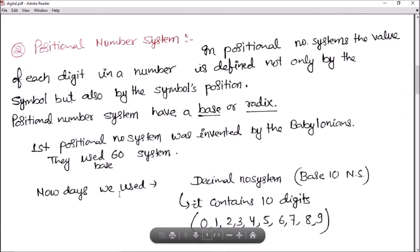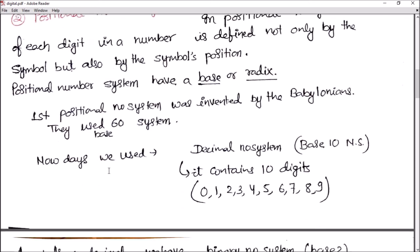They used base sixty number system, which had sixty symbols. But nowadays, we use decimal number system which has base 10. That means it contains 10 digits: 0, 1, 2, 3, 4, 5, 6, 7, 8, 9. This includes 10 digits, therefore it is called decimal number system.